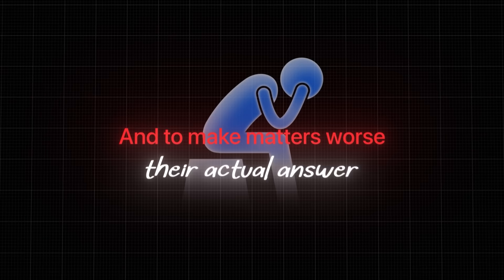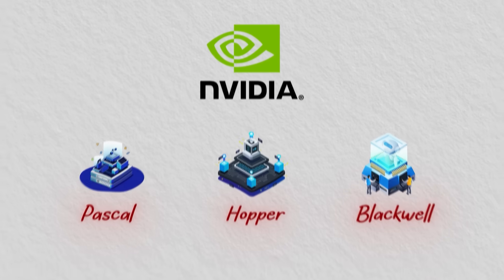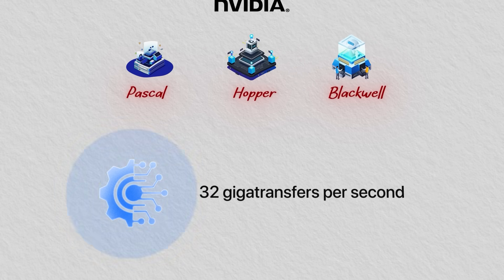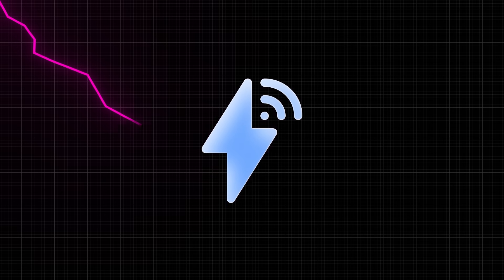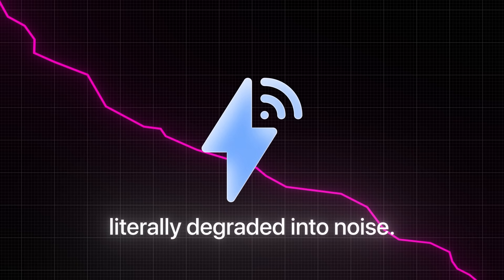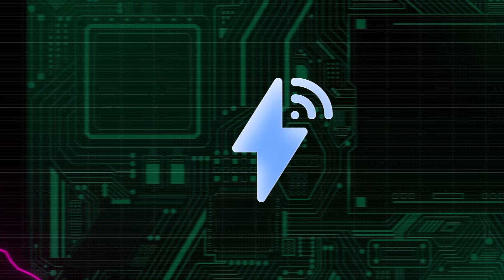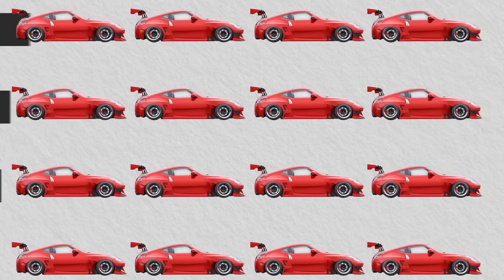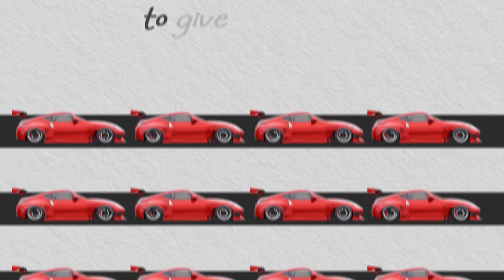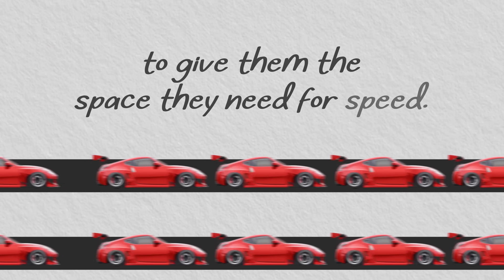Because at the speeds NVIDIA's AI factories demanded, 32 gigatransfers per second and climbing, electrical signals literally degraded into noise after traveling just 3 to 4 inches on a circuit board. It would be like having hundreds of racing cars on the street, but not enough lanes to give them the space they need for speed.